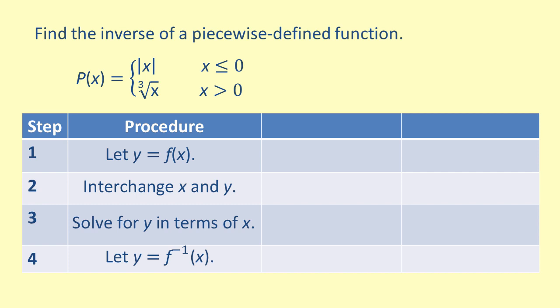Using the four-step procedure shown, let's find the inverse of a piecewise defined function. The piecewise defined function p of x is defined as the absolute value of x when x is less than or equal to 0, and as the cube root of x when x is greater than 0.